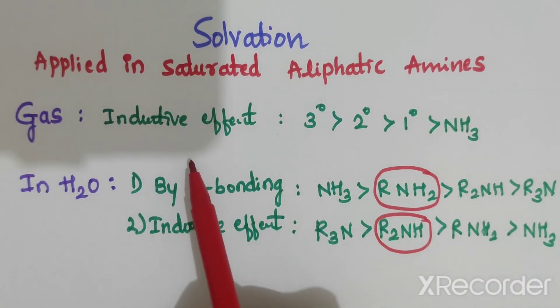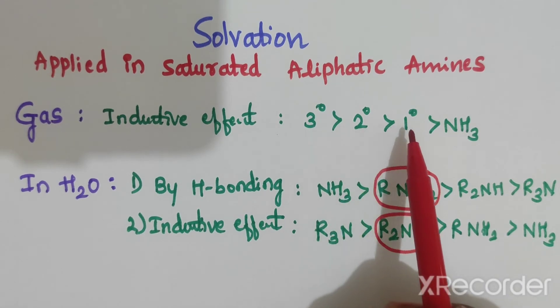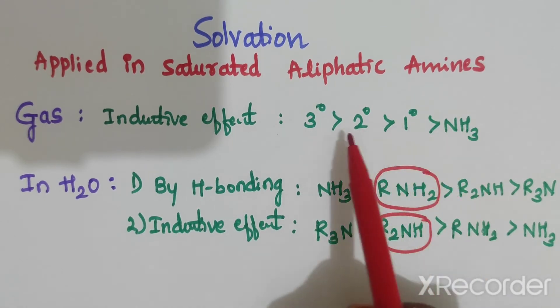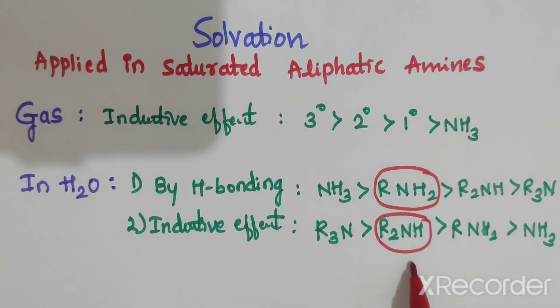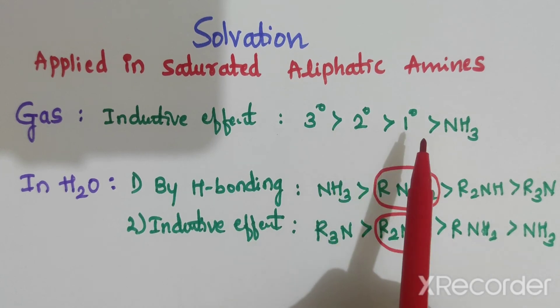In case of gaseous state, the order of basic amines is tertiary, secondary, primary, then ammonia. Ammonia is less basic and tertiary is more basic.